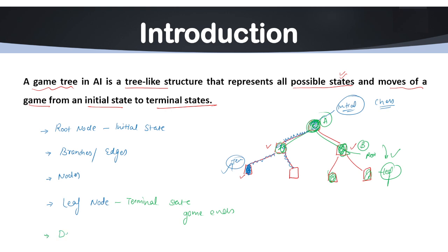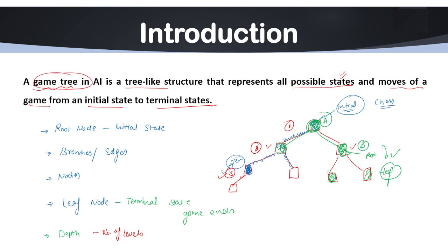Another component is depth. Depth is the number of levels in the tree, and it corresponds to the number of moves or turns in the game. For example, in this tree we have depth one and depth two. If we add another node, it becomes depth three. This is how a basic game tree works in online gaming.